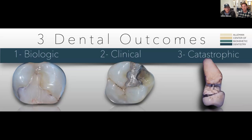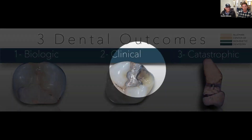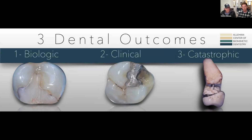We see three types of outcomes or failures in traditional dentistry: biologic failure, clinical failure, or catastrophic failure. We want to prevent catastrophic failure entirely, limit biologic failure, and while clinical failures are common, we can prevent even those to a high degree when we connect the tooth side to side, front to back, and top to bottom in the range of 30 to 50 megapascals.